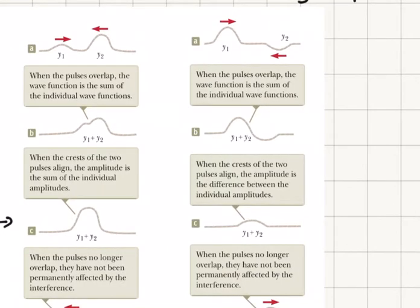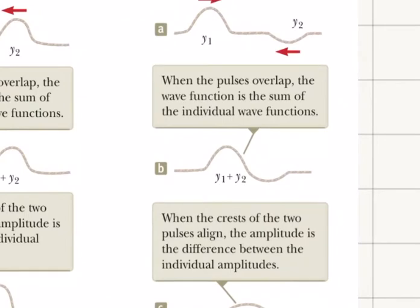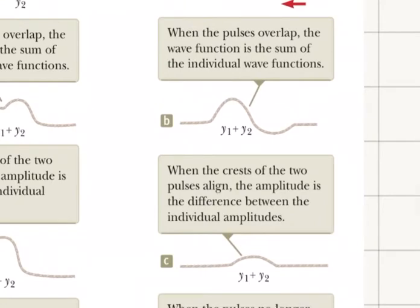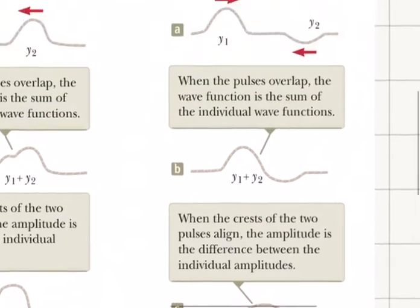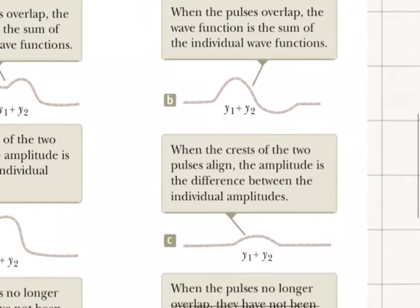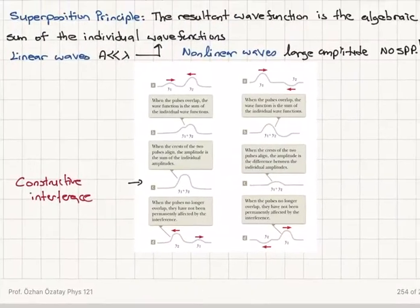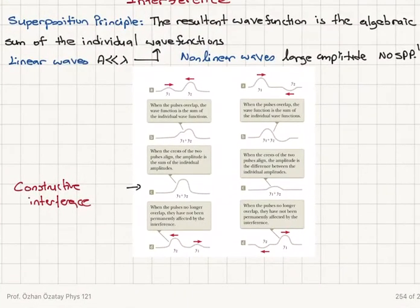In another scenario, if the two pulses are out of phase, the algebraic sum gives a resultant wave function with an amplitude that is the difference between the individual amplitudes. If they have the same amplitude, they completely cancel and you'd see nothing on the string for a moment, then they continue on their paths as if nothing happened. This is called destructive interference.